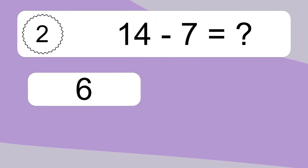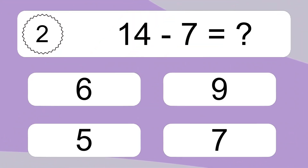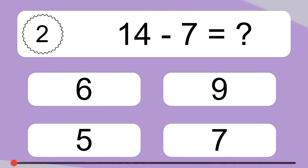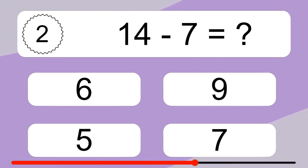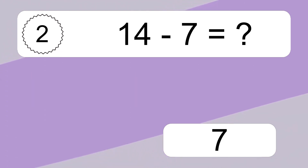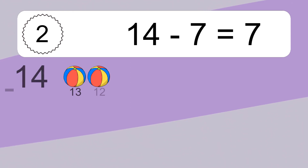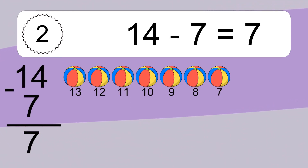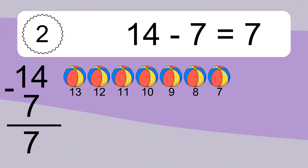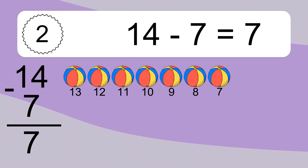14 minus 7 equals what? 14 minus 7 equals 7. Let's count it: 13, 12, 11, 10, 9, 8, 7.